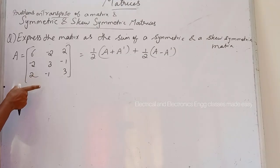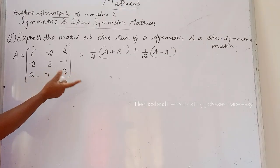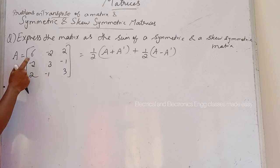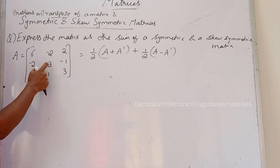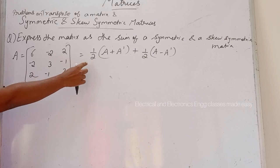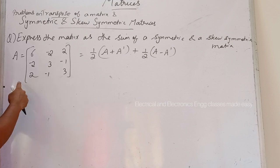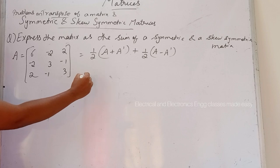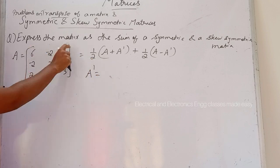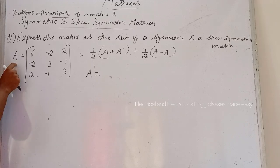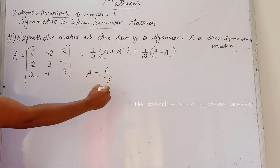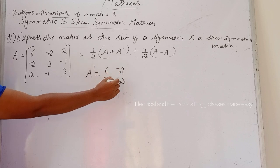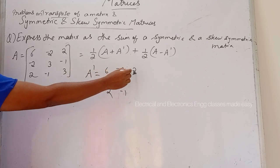Next problem: express matrix A = [6, -2, 2; -2, 3, -1; 2, -1, 3] as the sum of a symmetric and a skew-symmetric matrix. This can be expressed as half of (A + A transpose) plus half of (A - A transpose). First, find A transpose by changing rows into columns: [6, -2, 2; -2, 3, -1; 2, -1, 3].